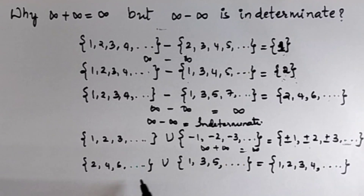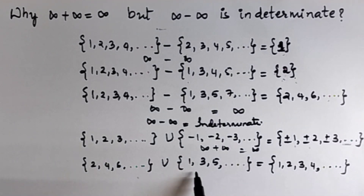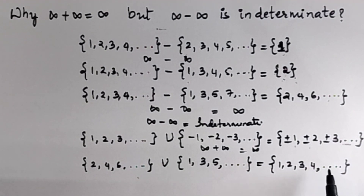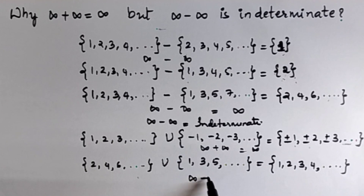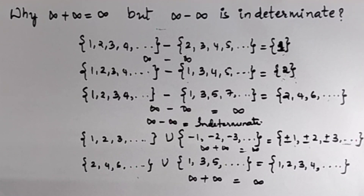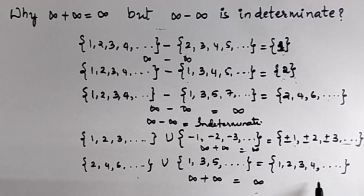Consider one more example: the set of all even natural numbers {2, 4, 6, ...} and the set of all odd natural numbers. When these two are combined, you will get the set of all natural numbers, which is an infinite set. So in this case, infinity plus infinity equals infinity. Therefore, if you consider any example involving infinite sets, when you combine two infinite sets, you will always get an infinite set.